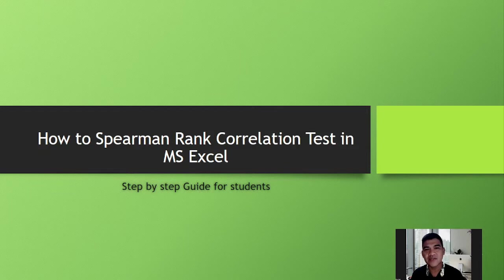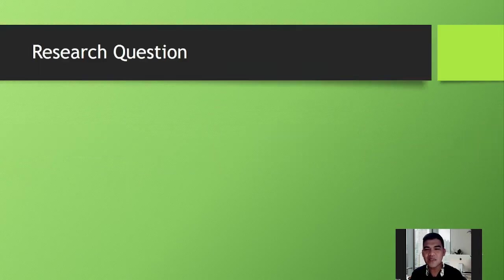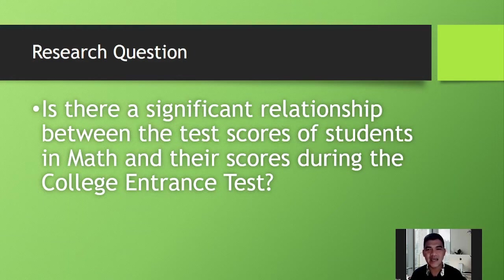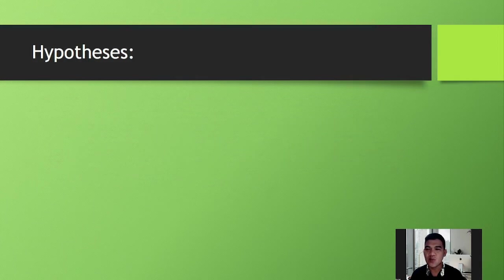The Spearman rank correlation test is the alternative test that you can use when one of the assumptions in the Pearson correlation test is not satisfied. For this presentation we will answer the same question: is there a significant relationship between the test scores of students in math and their scores during the college entrance test?